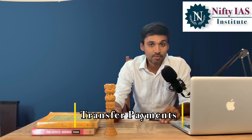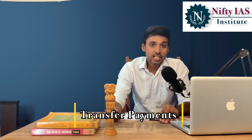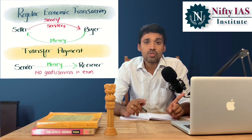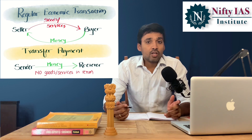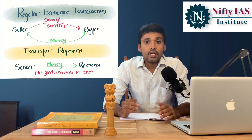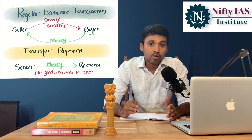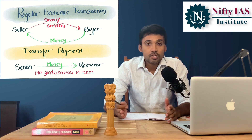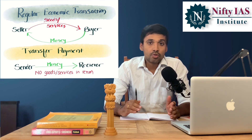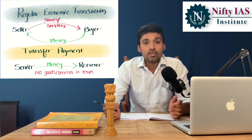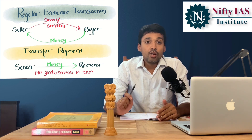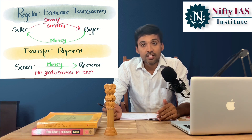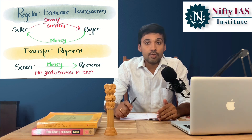This is Economics 101. In this lecture, we are going to talk about transfer payments. Transfer payments are payments done with no return of goods or services in exchange. Generally, when a payment is made from entity 1 to entity 2, goods or services move in the opposite direction. For example, if you go to a doctor, you pay for consultation, or you go to a supermarket and pay money for vegetables — those are regular economic transactions. In a transfer payment, money moves from one entity to another, but there are no goods or services in return, which is why they are called transfer payments.